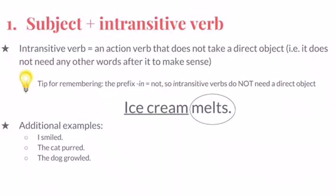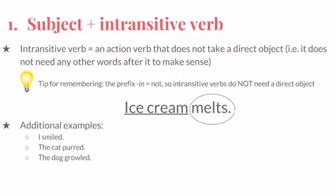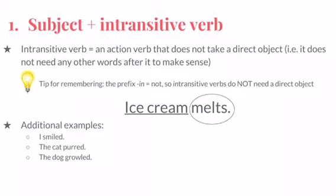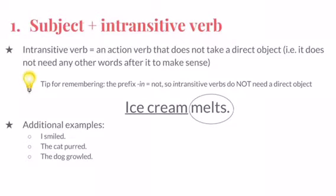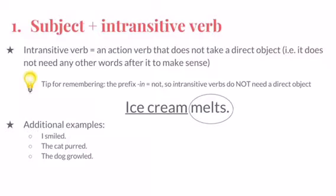Basic Sentence Pattern Number 1: Subject plus Intransitive Verb. An intransitive verb is an action verb that does not take a direct object. We'll learn about direct objects in a minute, but for now, just remember that an intransitive verb doesn't need any other words after it in order to make sense. You can remember the word 'intransitive' by thinking of the prefix 'in,' which means 'not' — so intransitive verbs do not need a direct object.